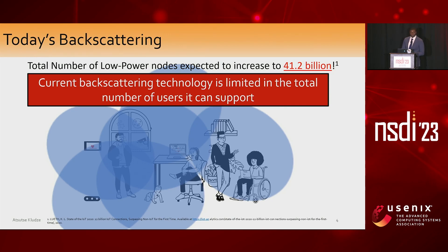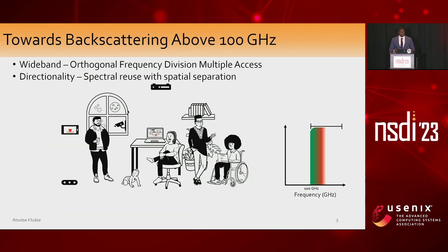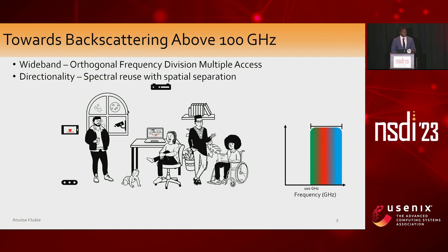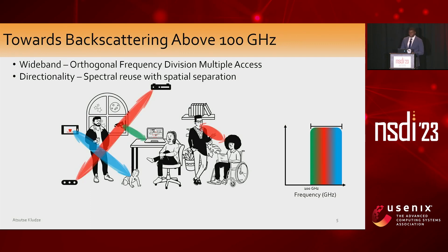So the question is, how do we fix this? One solution is enabling backscattering above 100 GHz. The reason is that with the wideband spectrum available, we can make each concurrent transmission on feasible orthogonal frequency channels to help reduce interference. And more importantly, with the directionality needed to help compensate for path loss at these high frequencies, we can actually utilize this to help with spatial reuse and spatial separation, allowing us to have a truly scalable and feasible backscattering network.